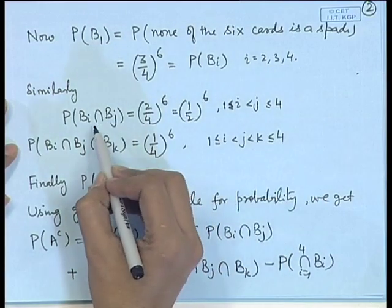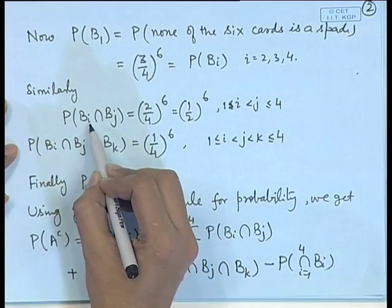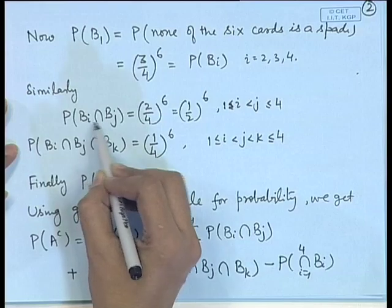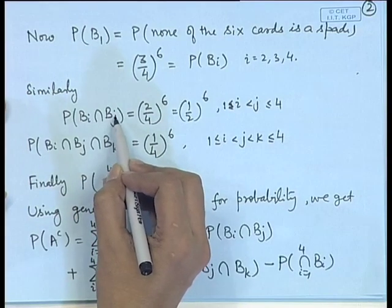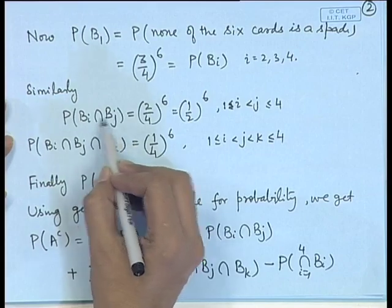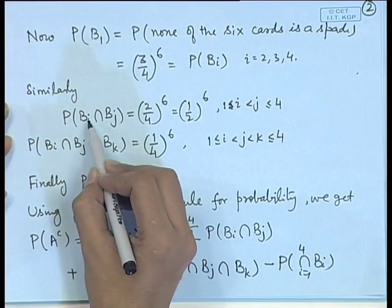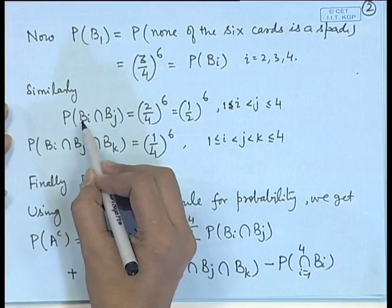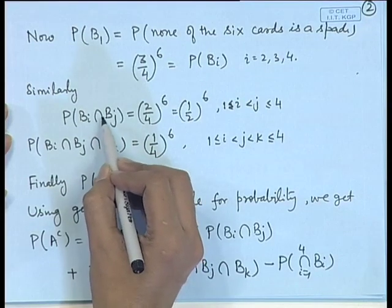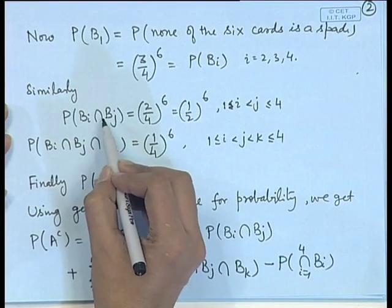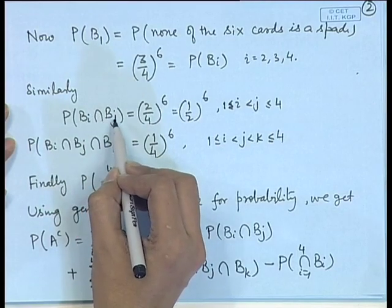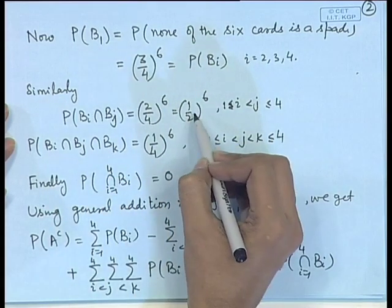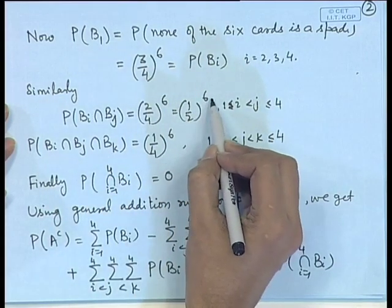This probability is the same if we replace spade-heart with any other pair: spade-club, spade-diamond, heart-diamond, heart-club, or diamond-club. Therefore P(B_i ∩ B_j) = (1/2)^6 for all i < j.